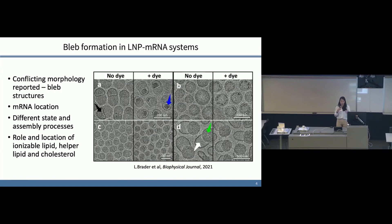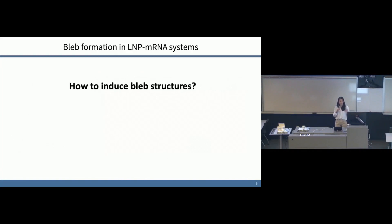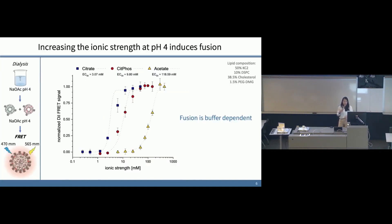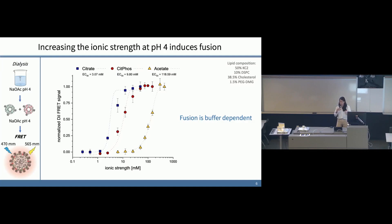Questions remain about the role of ionizable lipid and lipid composition. In our study, we set out to first understand how to induce these bleb structures. We know from previous studies that fusion is a very important event in LNP formulation. We investigated whether different buffers and different concentrations — and their ionic strengths — impact the fusion of LNPs at pH 4. Using FRET, we looked at three different buffers: citrate, citric phosphate, and acetate. Citrate can induce more fusion at lower ionic strength, making it a more fusogenic buffer for LNP formation compared to citric phosphate and acetate.